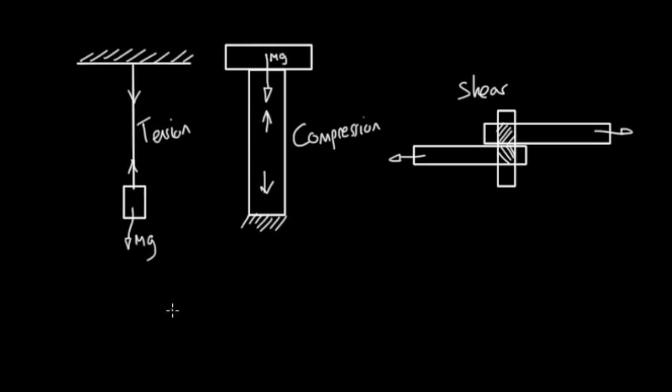And when a material's experiencing a force you say it's under stress which has the symbol sigma, at least for compression and tension. When you're talking about axial forces you use this symbol sigma. And it's equal to the force, so in this case mg, over the cross sectional area of the material. It's the area perpendicular to this force.